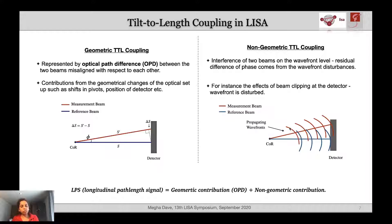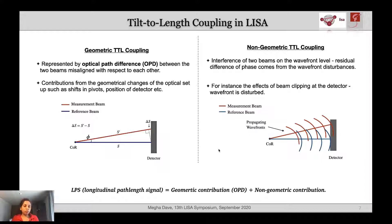The non-geometric TTL coupling is associated with the wavefronts. The interference of two beams on the detectors is the interference of the respective wavefronts at each point of the detector. If there are continuous related misalignments of the beams, this interference at the wavefront level gets disturbed — that is non-geometric TTL coupling. We are interested in investigating the longitudinal path length signal, which has contributions from both the geometric and non-geometric counterparts. Our interests are inclined towards geometric TTL coupling because we have control over the geometry of the optical setups, and by optimizing the geometry we can reduce the overall cross-coupling.